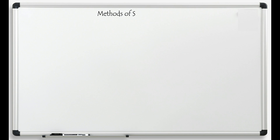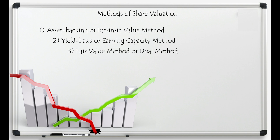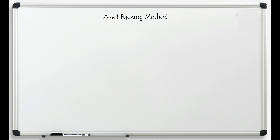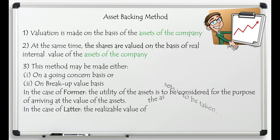There are three methods of share valuation: (1) Asset Backing or Intrinsic Value Method, (2) Yield Basis or Earning Capacity Method, and (3) Fair Value or Dual Method. In this video we will cover the Asset Backing or Intrinsic Value Method. In this method, we try to find out the real asset value of the company and based on that determine the share value. This method can be applied on either a going concern basis or a breakup value basis.